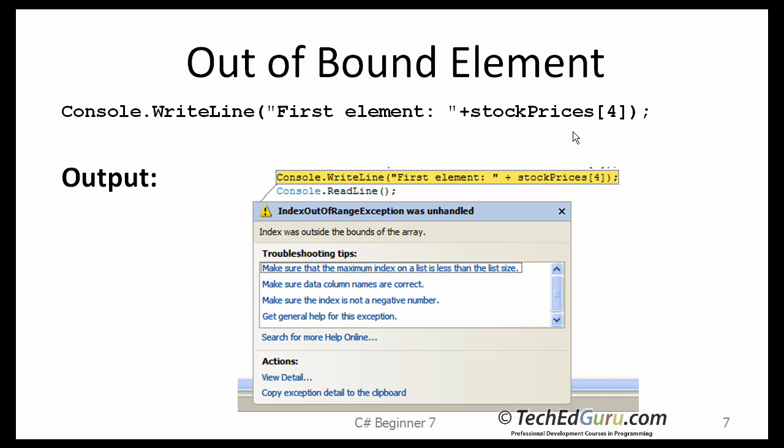Remember, the stock prices array on the previous slide had 4 elements, which means its valid indexes were from 0 through 3. 0, 1, 2 and 3. Here, I am trying to print the stock prices with an index of 4, which does not exist, which is out of bounds.